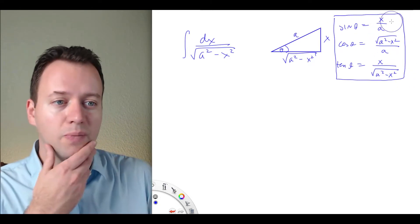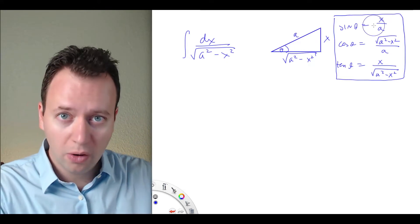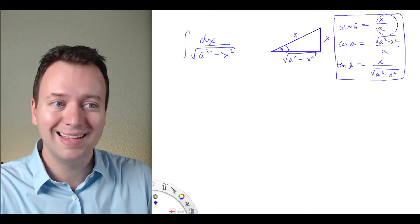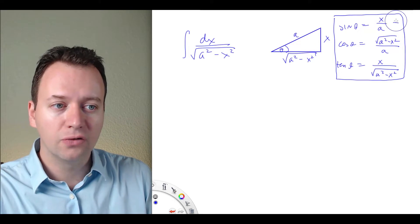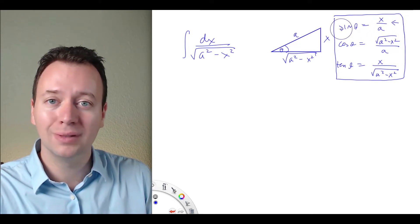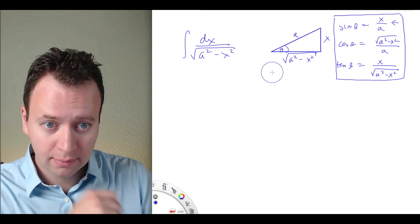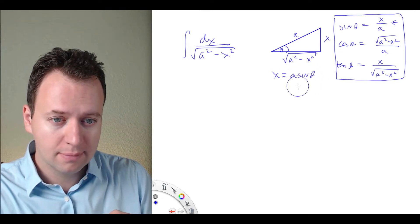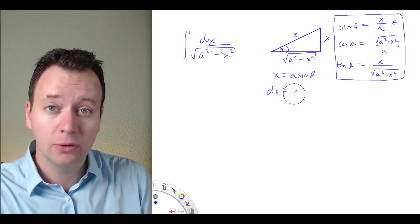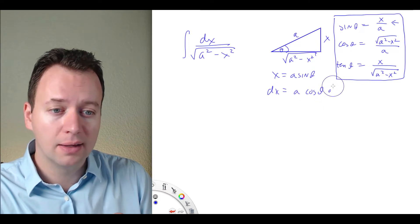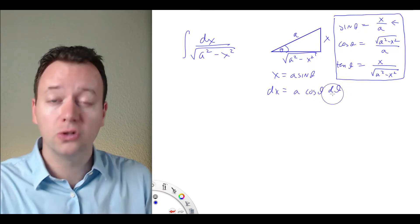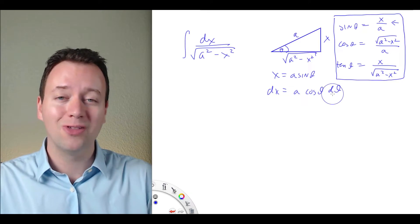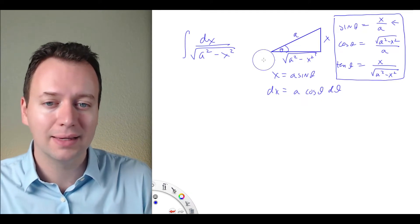The simplest relation is the one that only involves x with no square root, and that's the one that we differentiate to get the dx. From this equation, we see that x is equal to a sine of theta, and therefore dx is equal to a cosine of theta dθ. Just differentiating this — sine gives you cosine — so we end up with a cosine of theta dθ.